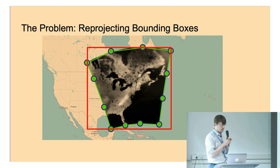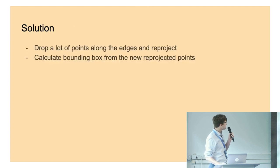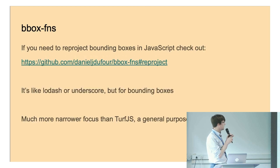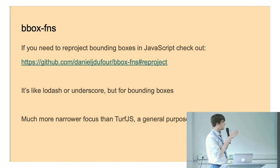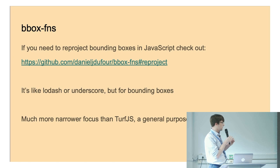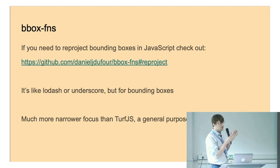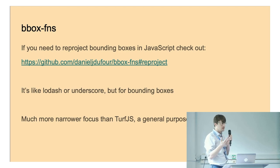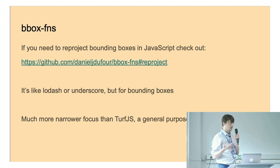This is not something unique to georaster layer. If you need this in JavaScript, you could check out bbox-fns, which is sort of like Lodash or Underscore but for bounding boxes — a bunch of utility functions. It's not competing with Turf.js; it's much more narrowly focused. Turf is more of a general purpose library for GeoJSON. It's my hope that if you're working in another language, you could apply this principle to reprojecting the extent of your images more accurately.